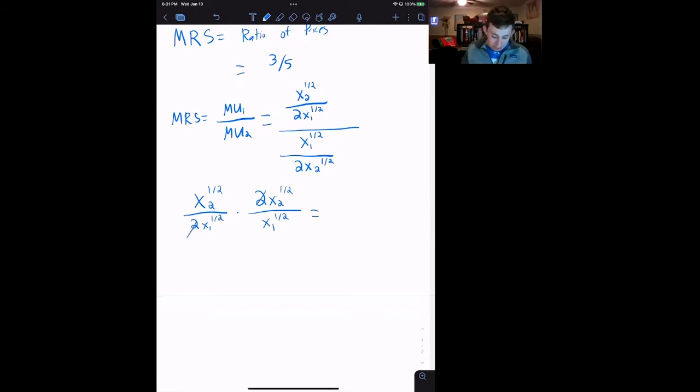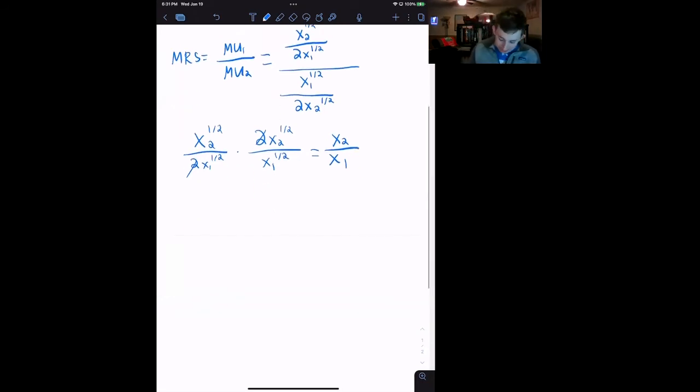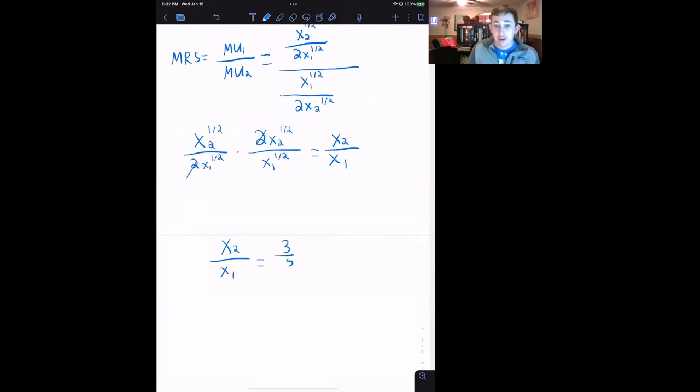X2 to the one-half times X2 to the one-half is just X2 to the first. Similarly on the bottom. So we've got X2 over X1. Go ahead and set that equal to the prices. We've got X2 over X1 equals three-fifths.